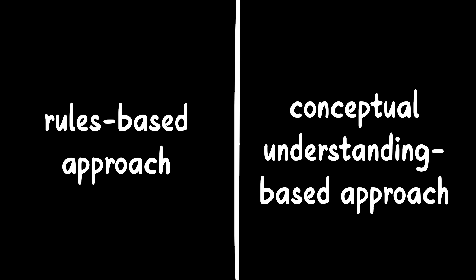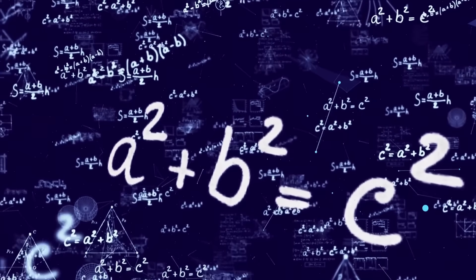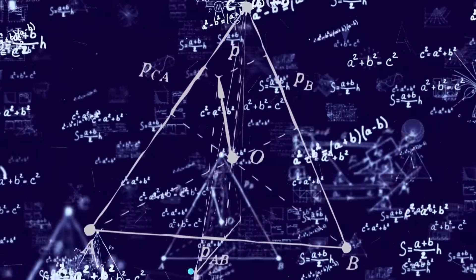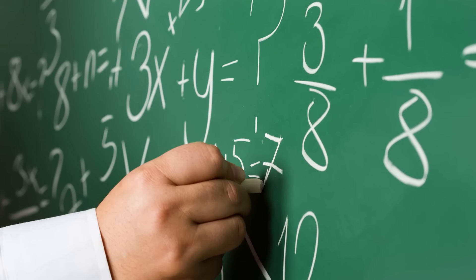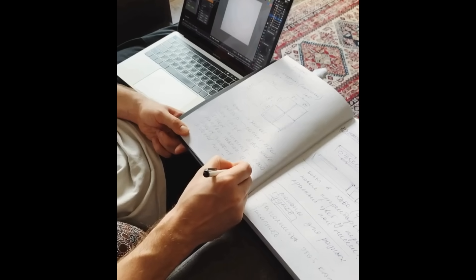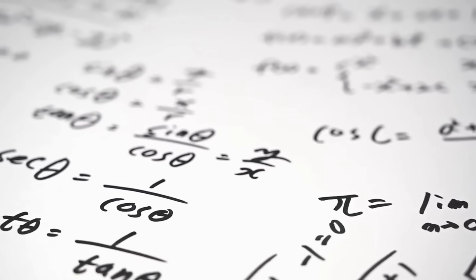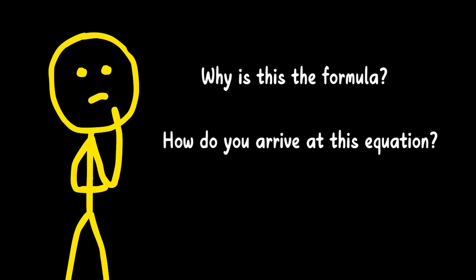And this is where the shift happens. You start to see math not just as a set of rules to follow, but as a coherent system of ideas that are all connected. To use this approach, you don't just have to memorize steps mechanically. You have to understand the why behind each rule. Ask yourself, why is this the formula? How do you arrive at this equation? Is there another way to solve this problem?